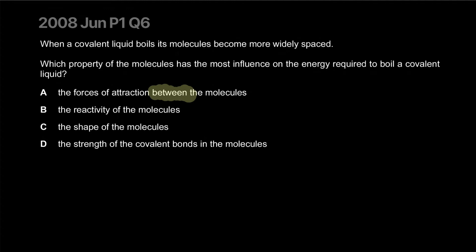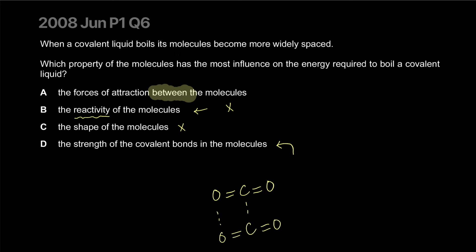Reactivity would dictate how reactive they are — chemical reactivity — that's wrong. Shape of the molecule, what's that got to do with anything? Strength of the covalent bonds would probably talk about reactivity and stability. So covalent bond strength — like carbon dioxide, you might imagine, has very strong covalent bonds because they're double. But between two carbon dioxide molecules there's very weak attraction. That's what allows it to be a gas rather than a solid at room temperature.